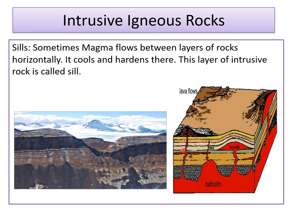Sometimes magma flows between layers of rocks horizontally, as you can see here. It cools and hardens there. This layer of intrusive rock is called a sill. You can see in the picture that it has cooled and hardened horizontally between layers of rocks.